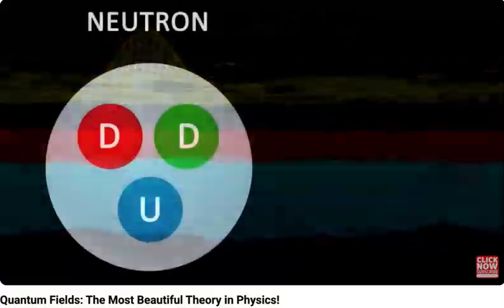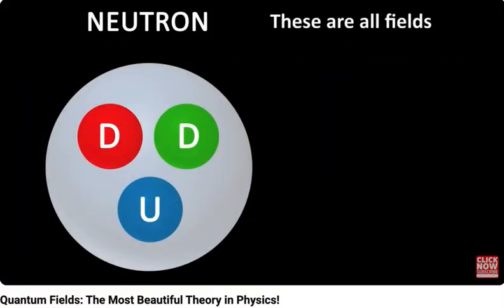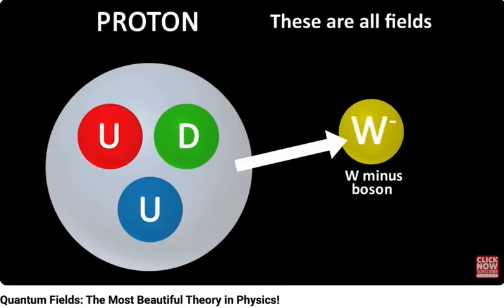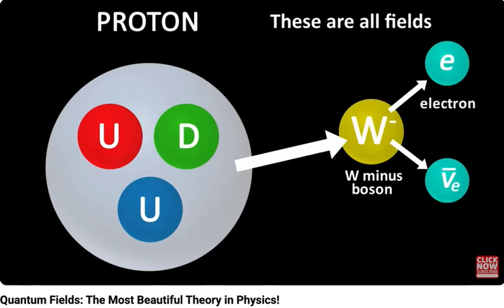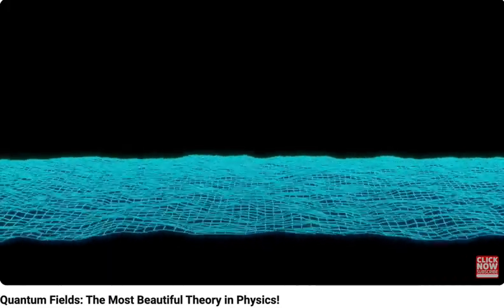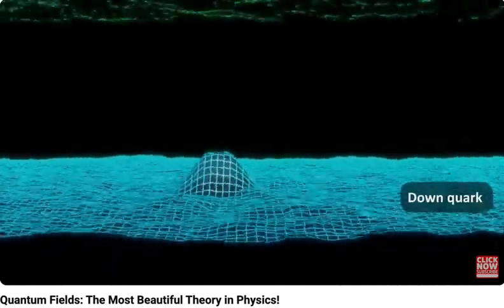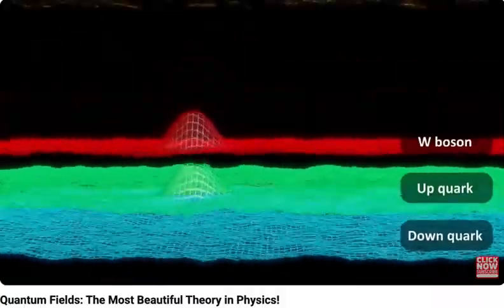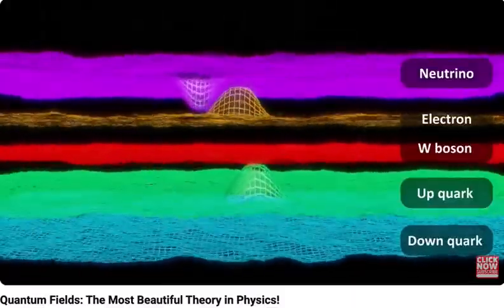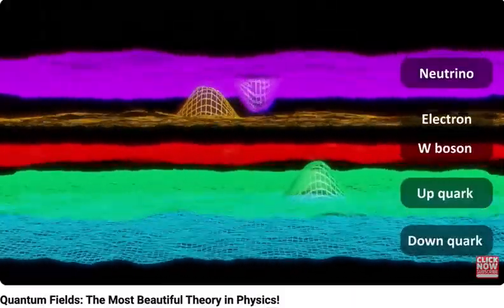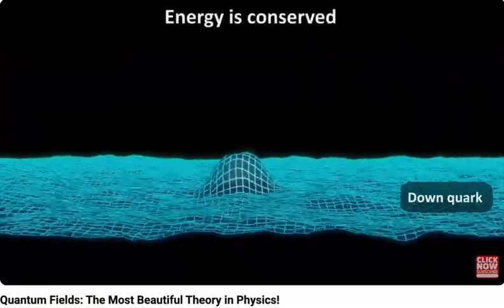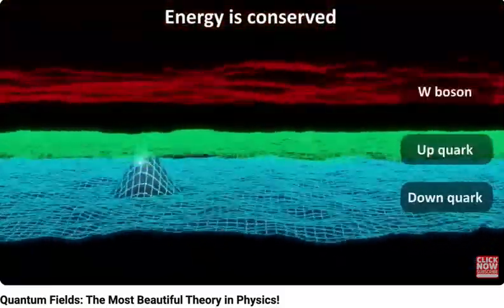So in our beta decay, for example, you start with the down quark field. This field transfers its energy to the up quark field, and the W boson field. The W boson field then transfers its energy almost immediately to the electron field, and the antineutrino field. So we started with one particle in the down quark field, and we ended up with three particles, simply by the fields exchanging energy. Note that although the number of particles changed, the total energy is always conserved. If you add up all the masses and kinetic energy at the beginning, they will add up to all the masses and kinetic energy at the end. In other words, the energy of the fields is the same before and after the energy exchange.